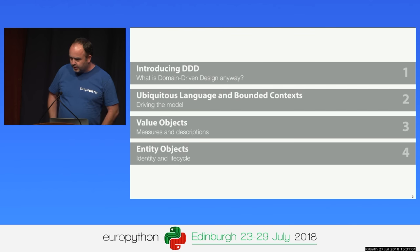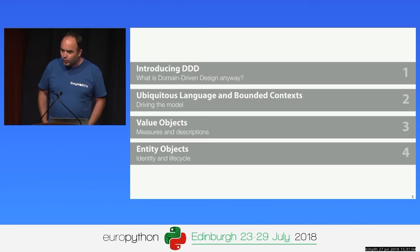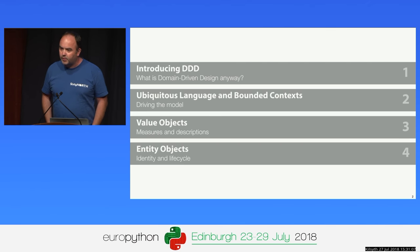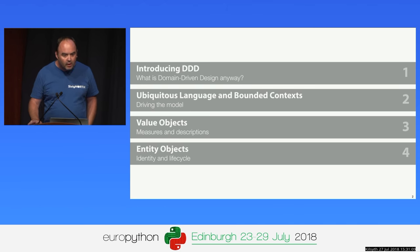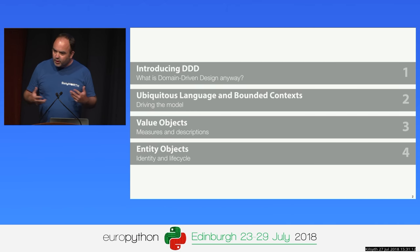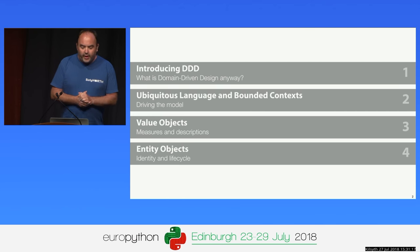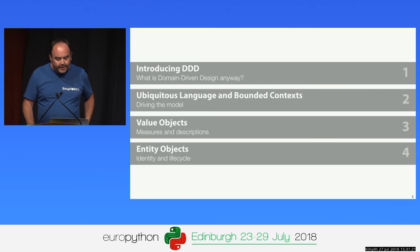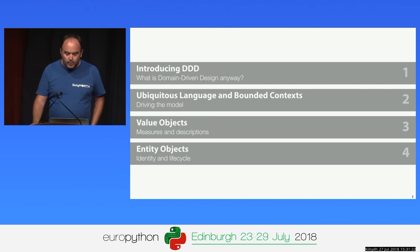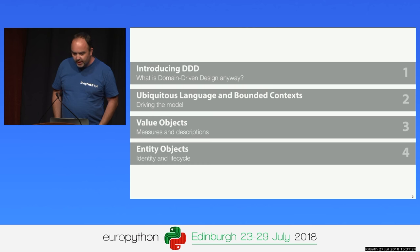There's a lot of content in this talk, and I'm not sure we're going to get through all of it, but I'm going to rattle through it, and you can come and talk to me afterwards if you need clarification. I'm going to start with a quick introduction of DDD, domain-driven design. Then I'm going to move on to some strategic DDD topics, ubiquitous languages and bounded contexts.